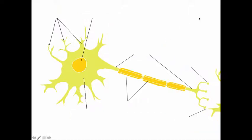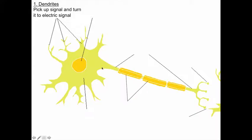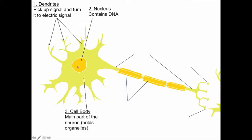Now let's look at what each part actually does, going left to right. The dendrites — these short branches — pick up a signal and turn it into an electric signal; this is where the electric signal starts. The nucleus contains the DNA, its usual function. The cell body is the main part of the neuron that holds the organelles. Since neurons use up a lot of energy, you'd expect to find a lot of mitochondria in these cells, because a lot of energy is needed to do what they do.